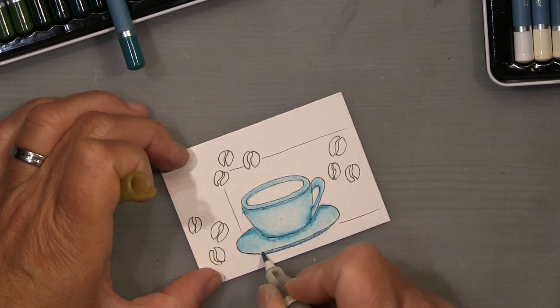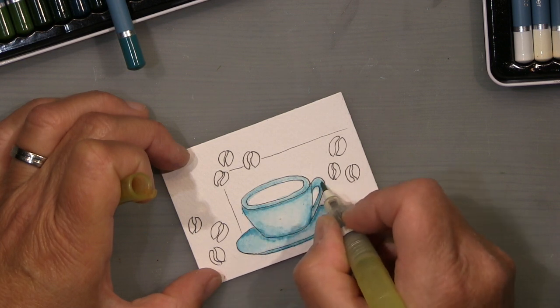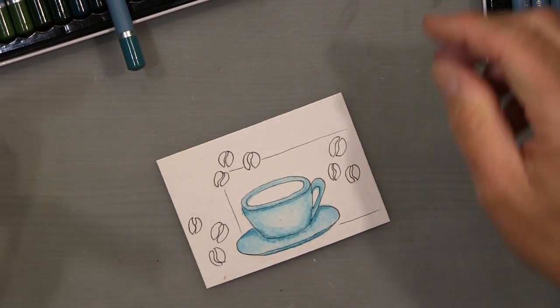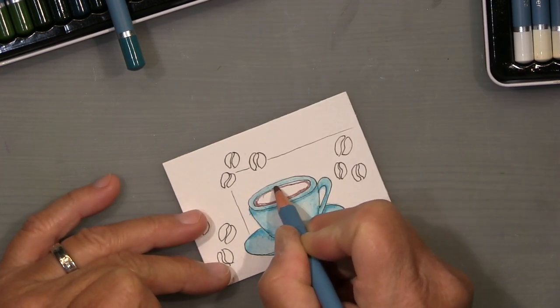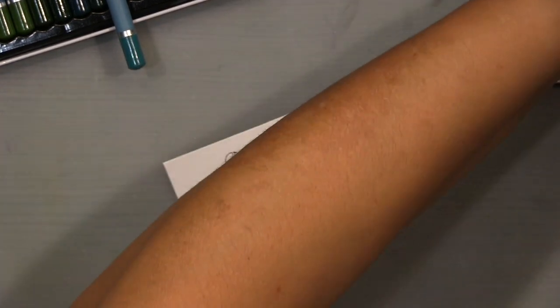Drag it into the middle so I have the middle a bit lighter and the edges a bit darker to get a bit of depth on it. Of course the coffee will be darker, definitely.